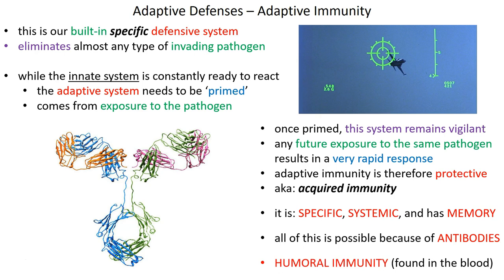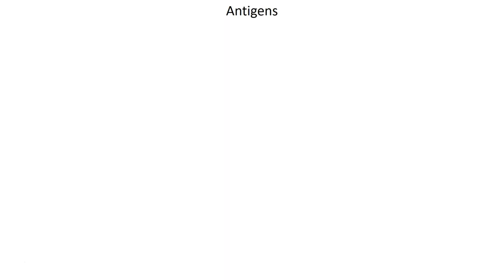These antibodies circulate in the blood. Way back when the blood was called the humerus or humoral fluids, and so the antibody-based immune system is often referred to as humoral immunity because the antibodies exist in the blood.